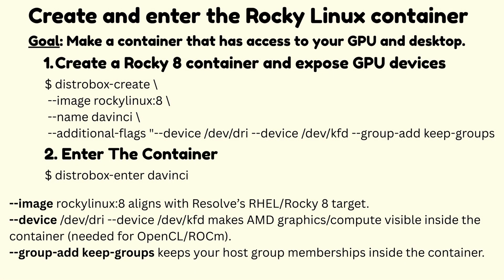Create and enter the Rocky Linux container. Make a container that has access to your GPU and desktop. First, create a Rocky 8 container and expose GPU devices by running the following command using distrobox-create. Second, enter it by running the command distrobox-enter and the name of the container.